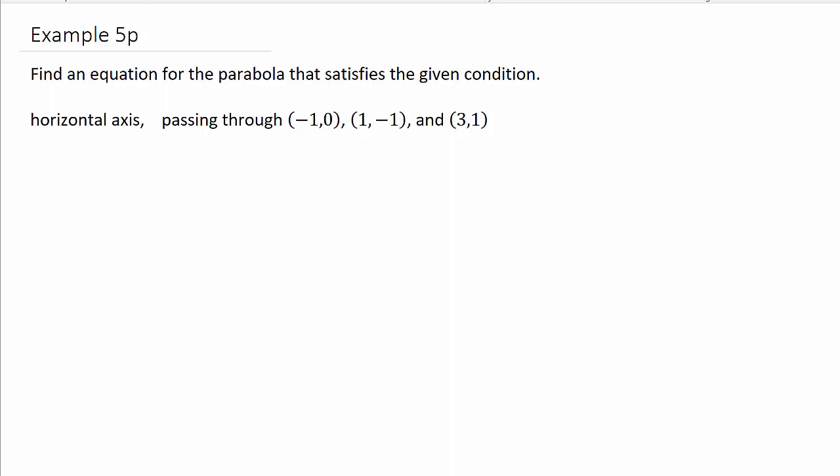find an equation for the parabola that satisfies the given condition. Has a horizontal axis and it passes through the points negative 1, 0, 1, negative 1, and 3, 1.